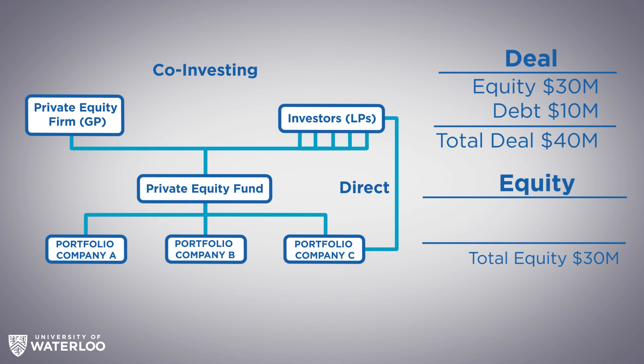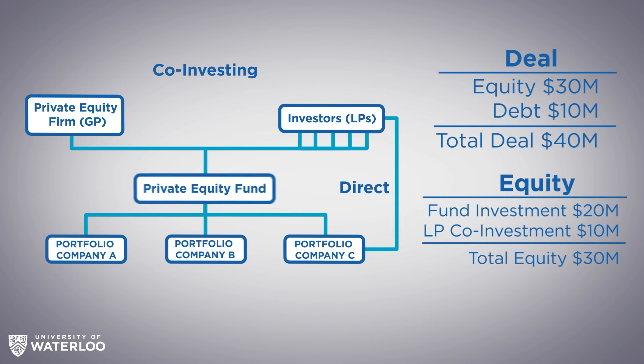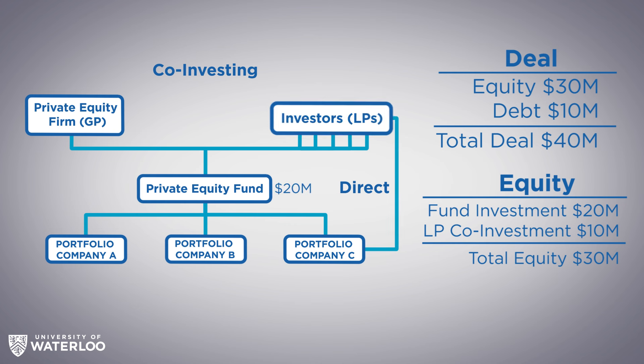But in the case of co-investing, the fund is only going to give $20 million, which the investor is participating in through the fund. The remaining $10 million — the difference between the $20 million in equity given by the fund and the $30 million equity needed — is offered to the investor to do on a direct basis. So the fund takes $20 million, and the investor takes $10 million.